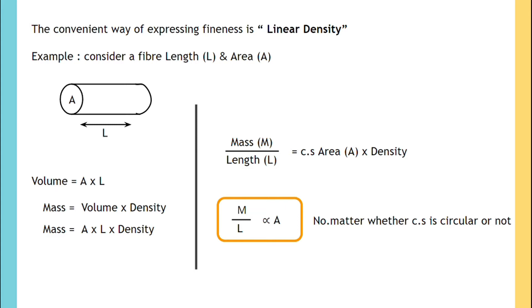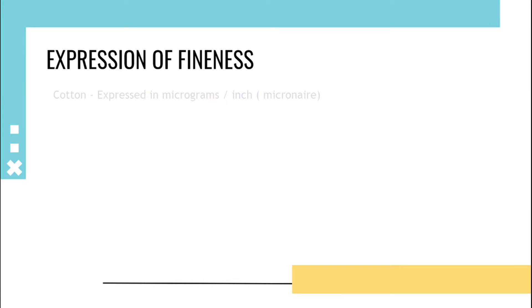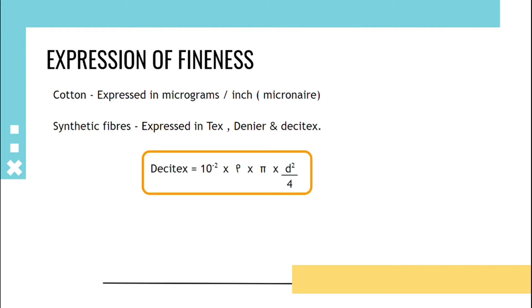Expression of fineness: Cotton is expressed in micrograms per inch, that is micronaire, and synthetic fibers are expressed in dex, denier, and desitex. Desitex formula is 10^-2 into density of fiber into π into diameter squared by 4.